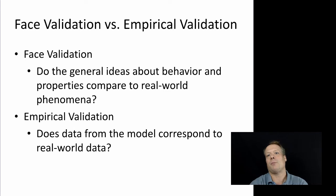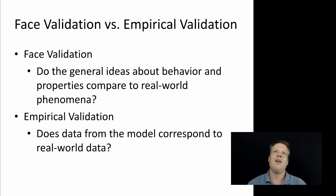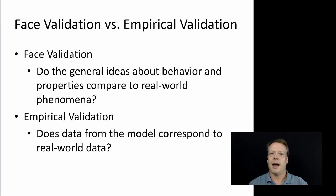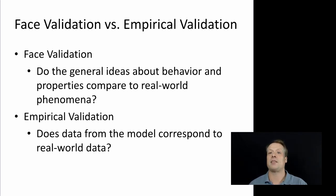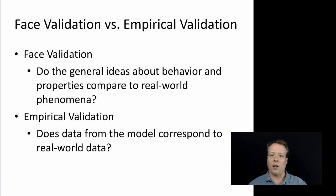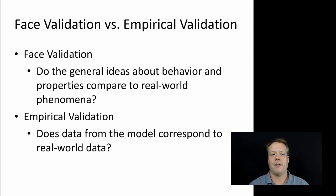You can also think about splitting validation claims into face validation claims versus empirical validation claims. Face validation just means: do the general ideas about behavior and properties compare to real-world properties? On face, does the model make sense? When we talk about agents in our model being influenced by advertising and word of mouth, on face that's something similar to the way real consumers are influenced. But you can also talk about empirical validation — does the data from the model, or that you're putting into the model, correspond to real-world data in some way? These are the standard ways of dividing up validation claims.